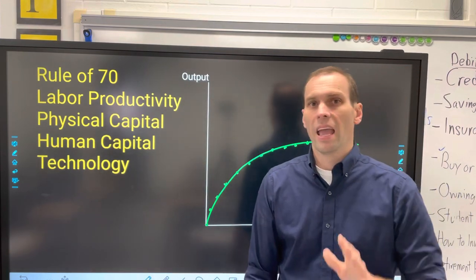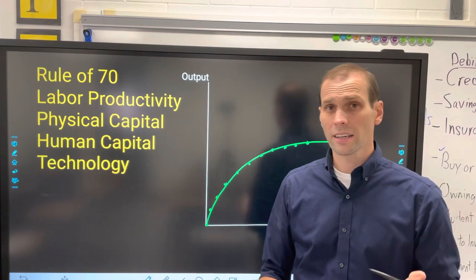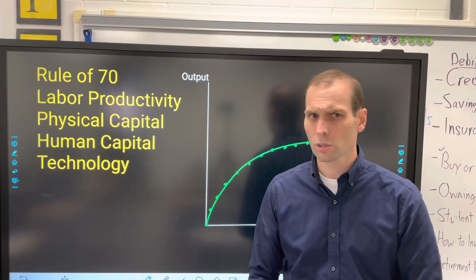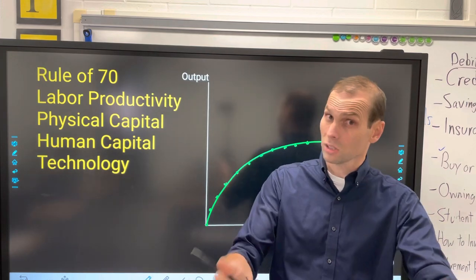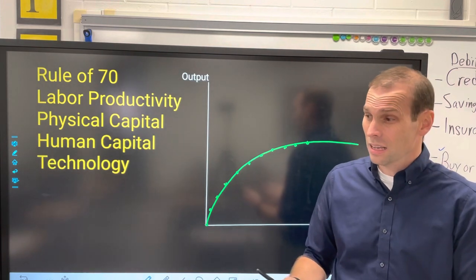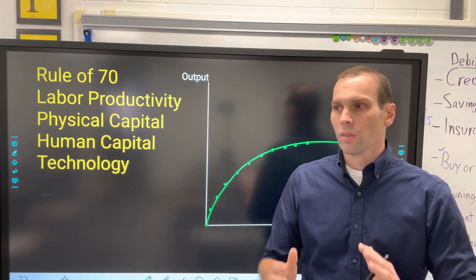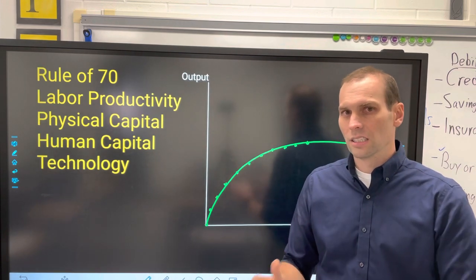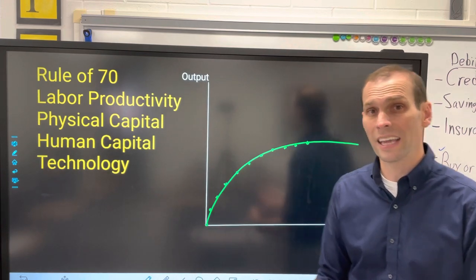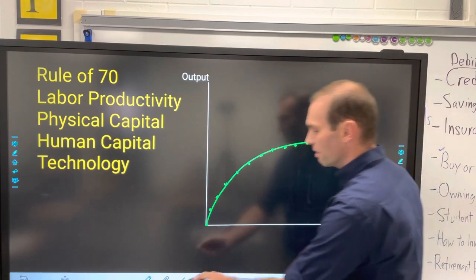Moving on, we have technology, which does something special with this curve. Technology is the technical means of producing something — it doesn't have to be computers, microchips, or software. It could be how you reorganize an economy or organize the business and production structure. When you add new technology, new types of machines, new ways of producing things, you can get additional output.